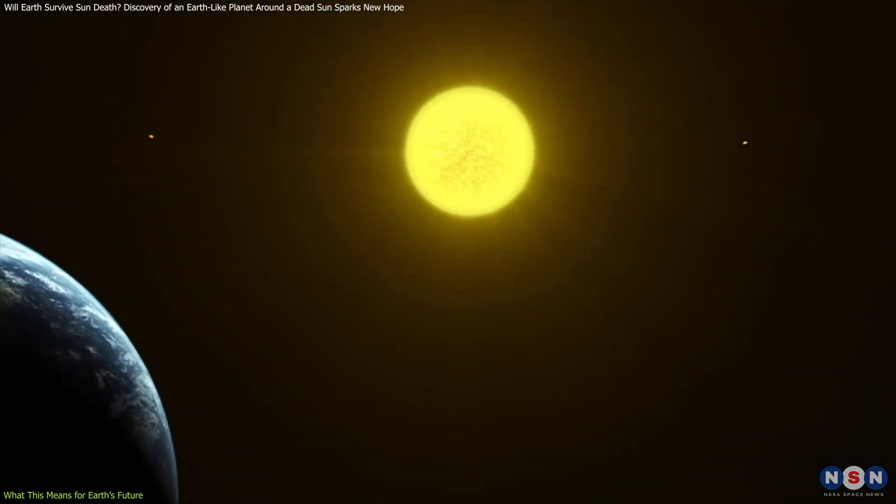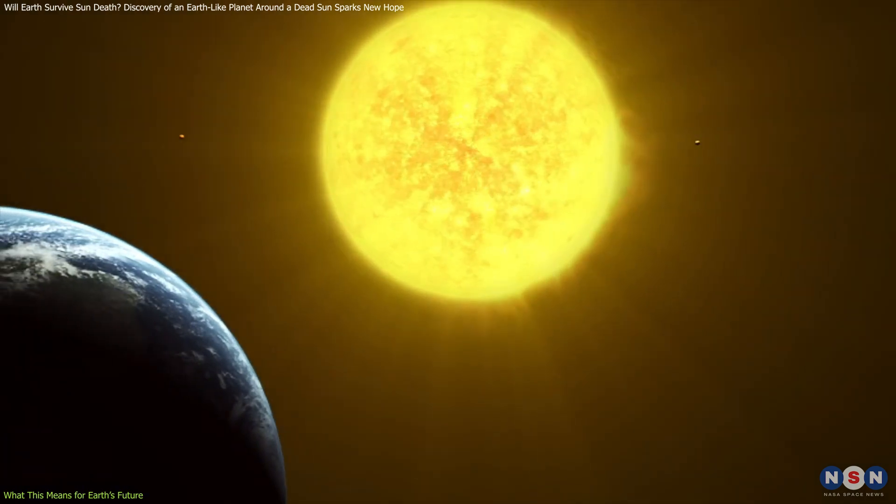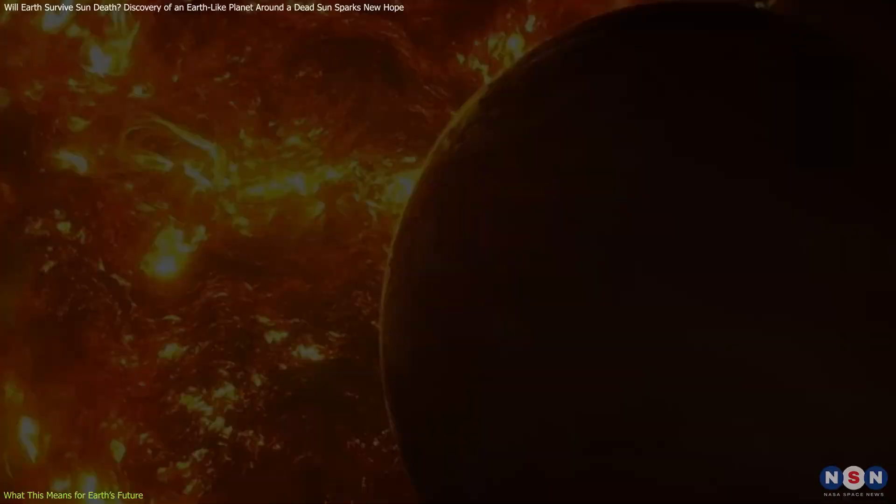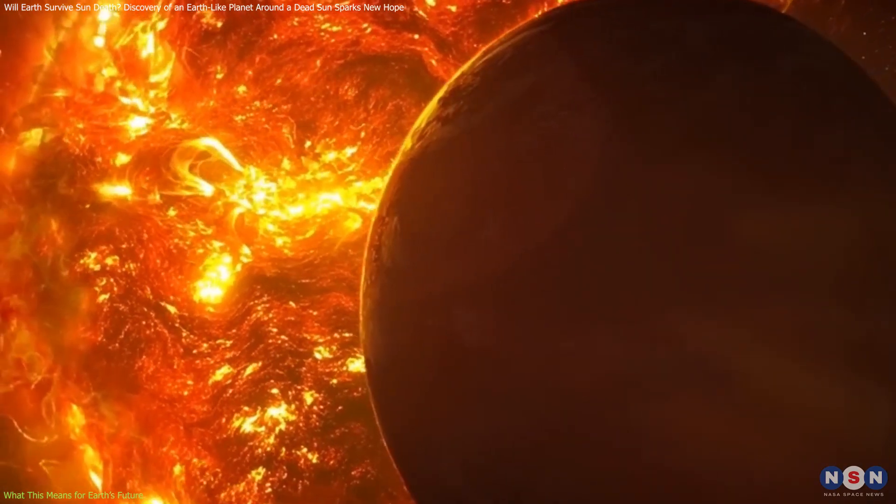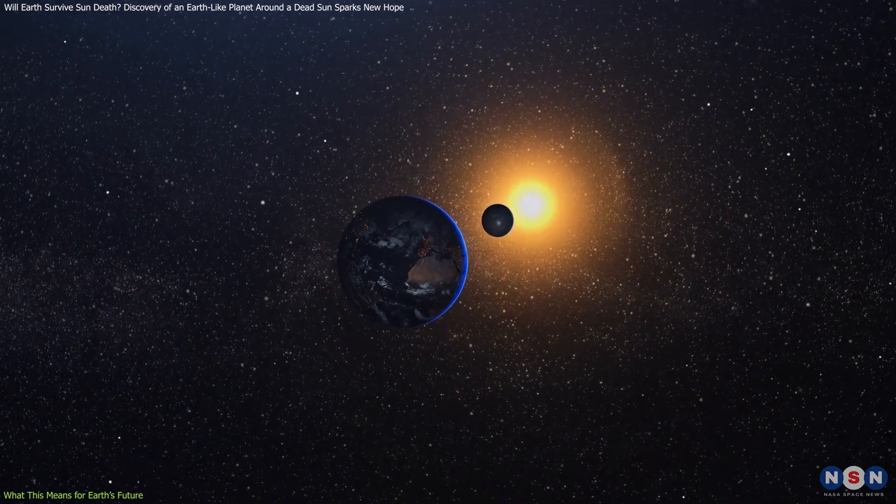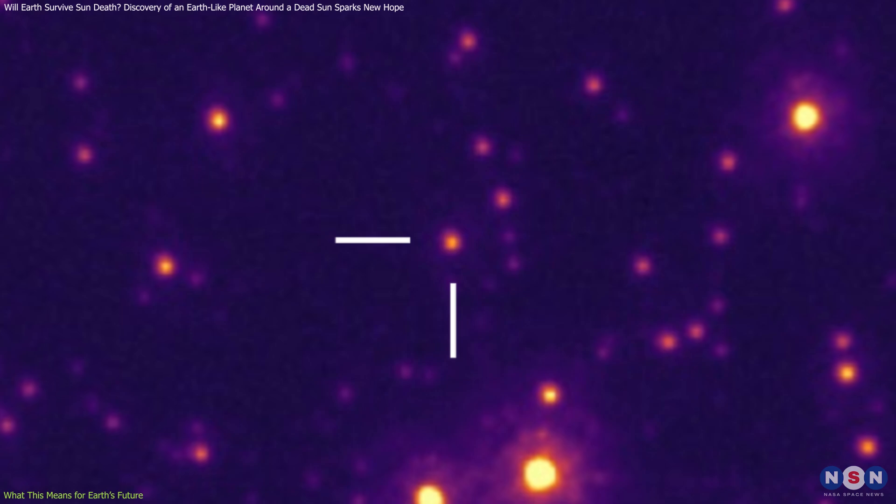As the Sun expands, it will lose a significant amount of its mass, causing the remaining planets, including Earth, to drift outward. If Earth manages to escape being engulfed by the Sun's outer layers, it could end up in a much larger orbit, similar to the Earth-sized planet found in the recently discovered system.